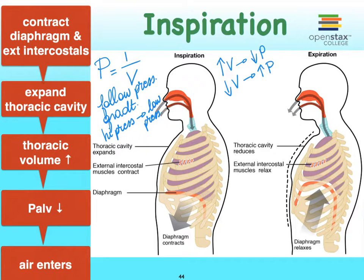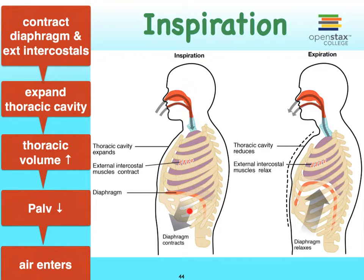So literally, what we can do is play around with the volume of our thoracic cavity — we're going to make it bigger and we're going to make it smaller — and that's going to change our pressures such that the pressures inside our lungs are going to be less than or higher than atmospheric pressure.